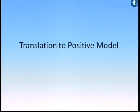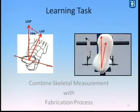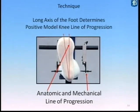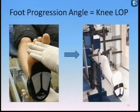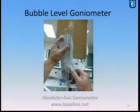Now that we've measured and shown the techniques for measuring foot progression angle, we want to translate that to our positive model. The long axis of the foot determines the spinal model knee line of progression. There are visualizations of measuring with the two-toe on the patient and then translating that to the orthotic workstation — one at the University of Malaya in Kuala Lumpur, Malaysia, where I've been involved with educational programs in the Far East, and one in Mexico where we're using the bubble level to establish and measure the foot progression angle on the positive model.